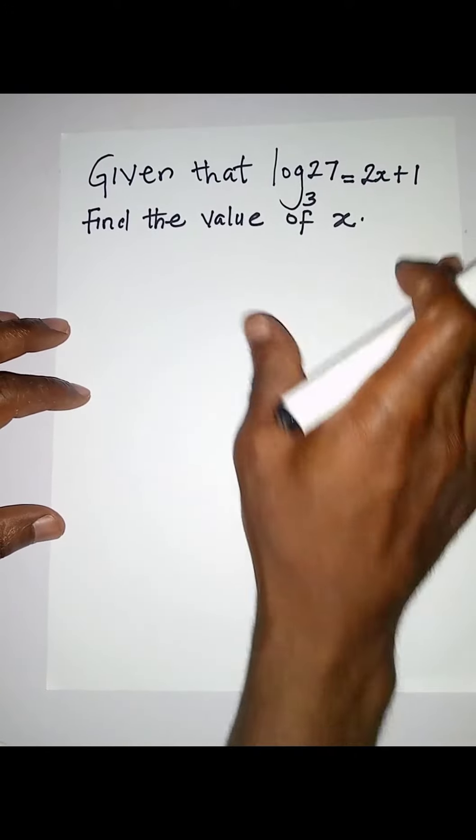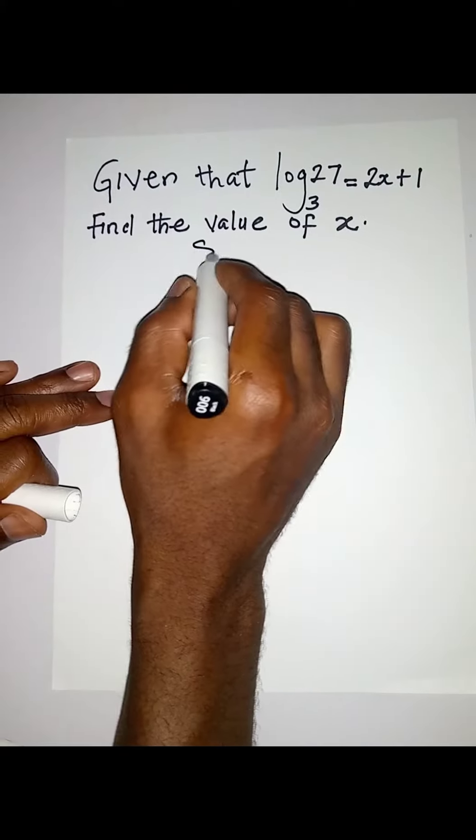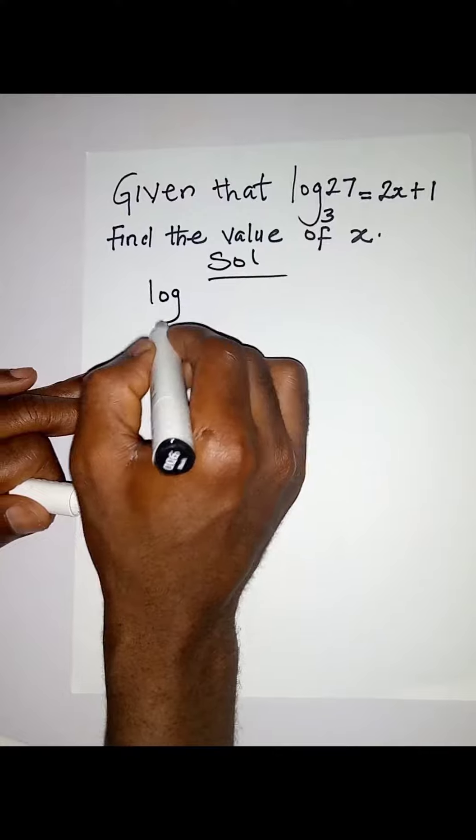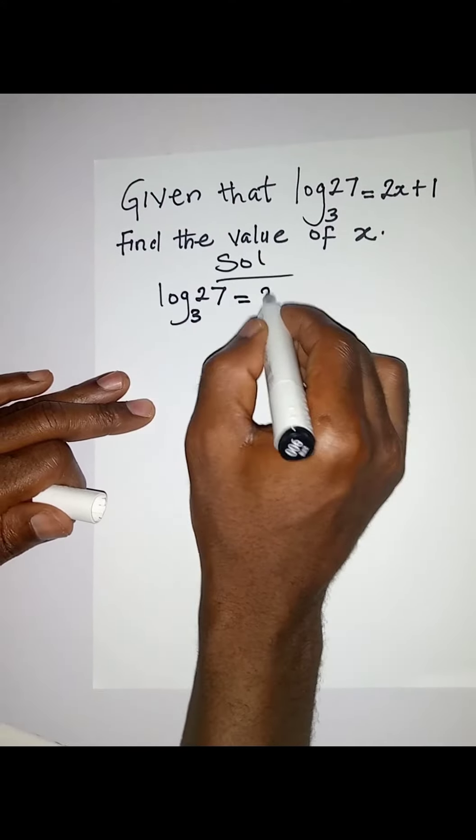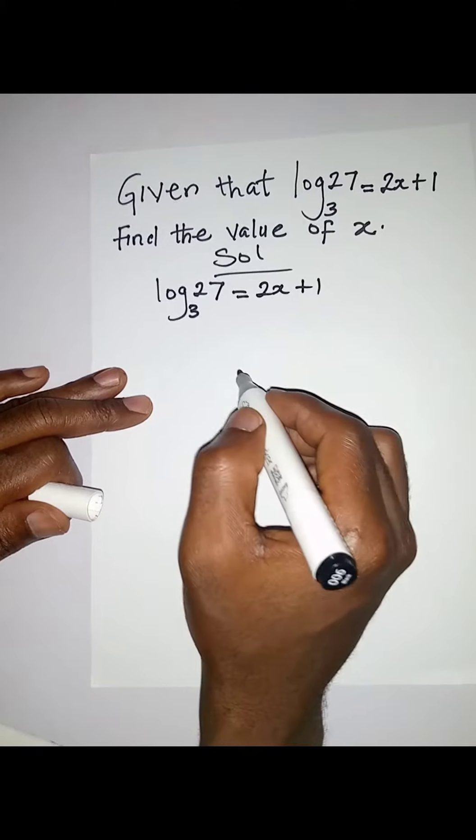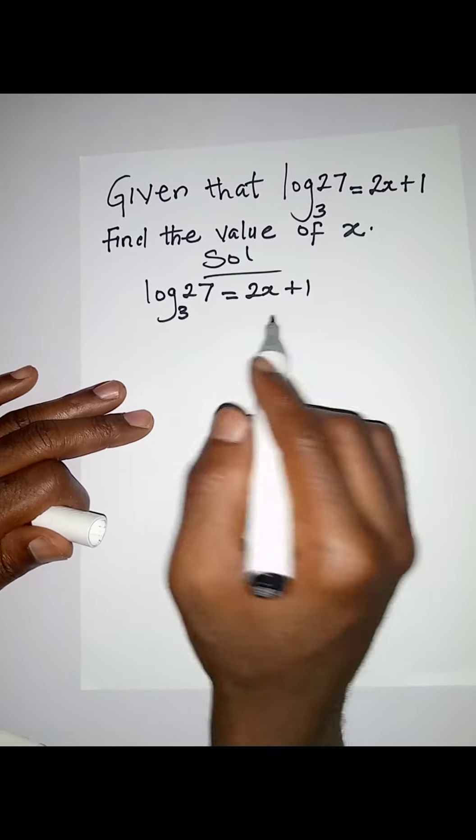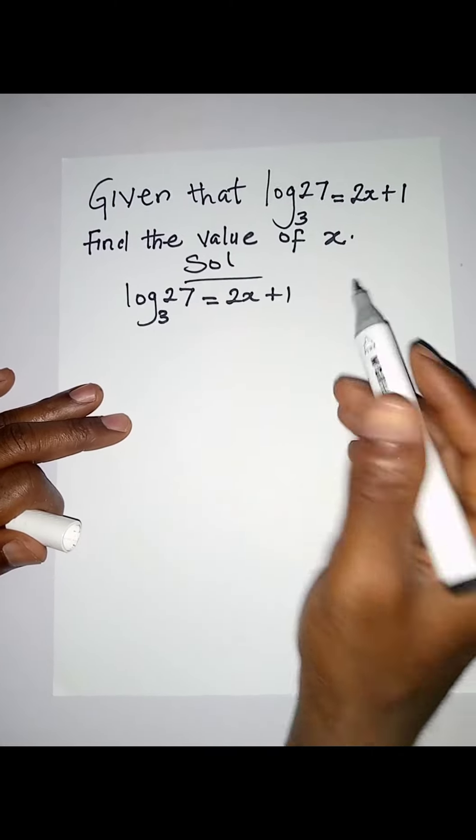Hello everyone, let's solve this very quickly. We have log₃(27) = 2x + 1, and we need to find the value of x. What do we do? Let us relate this to indices so that 3 will take this to be its power.